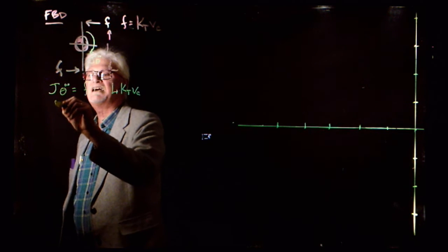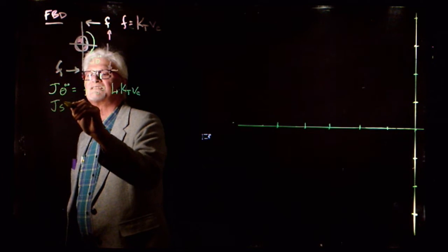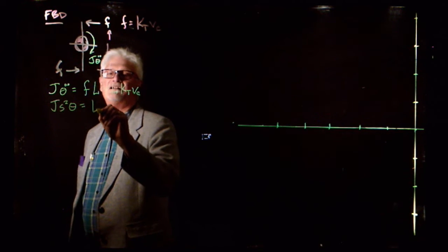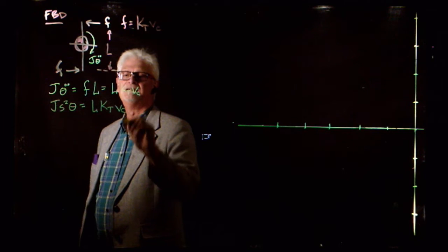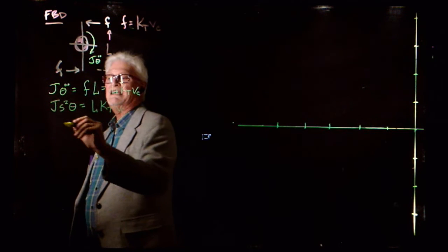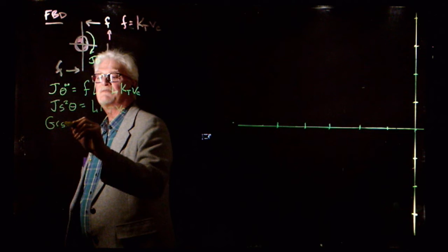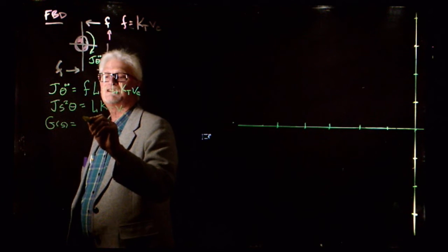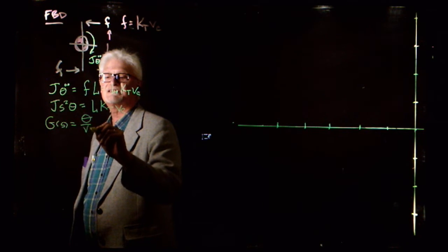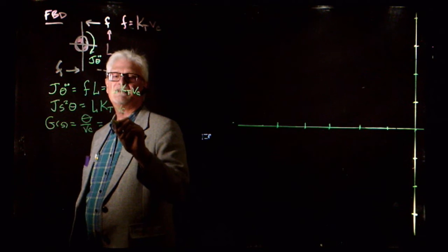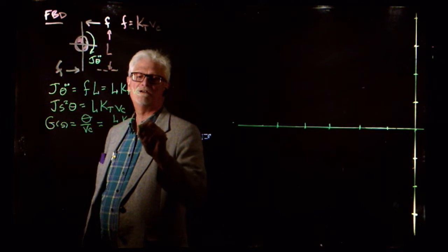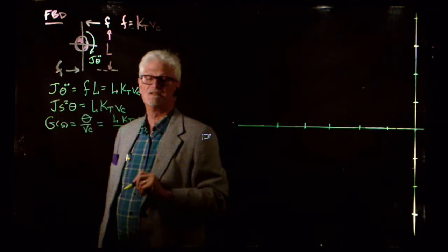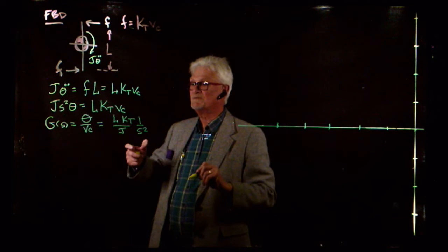Now we'll take the Laplace transform: J*S²*theta = L*K_T*V_C. We find the open loop transfer function G(s) = theta over V_C, which is L*K_T over J times 1 over S². So there's a constant, and we've got our open loop transfer function.